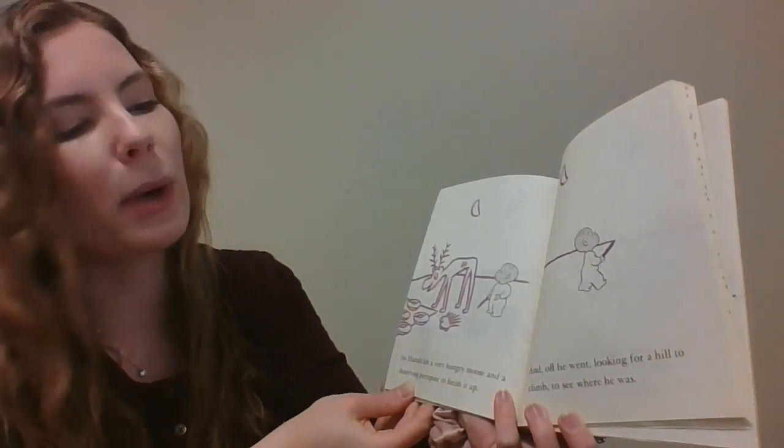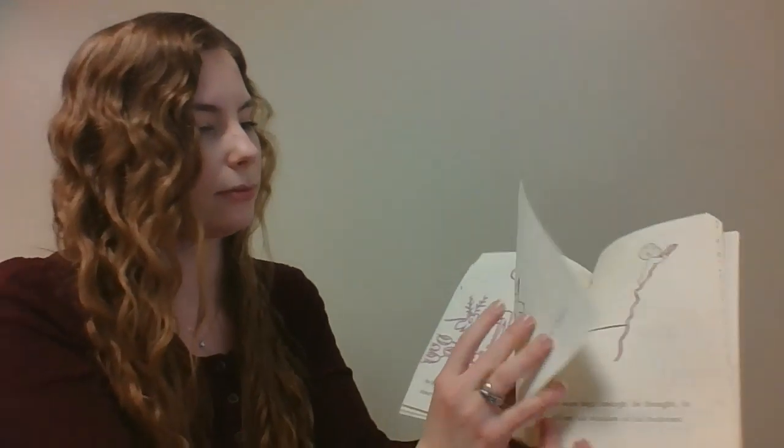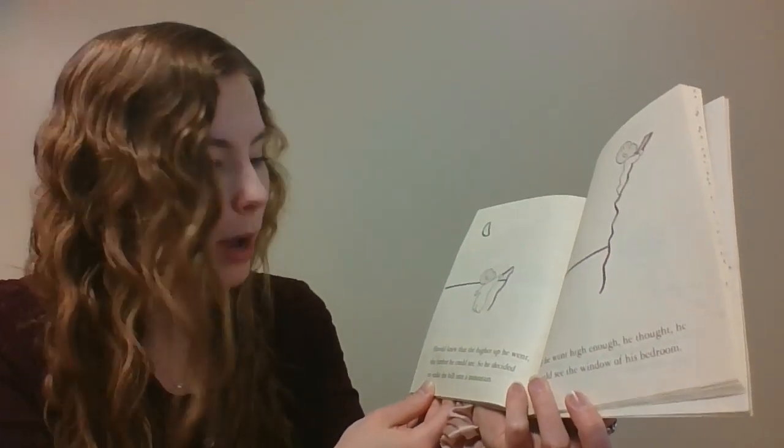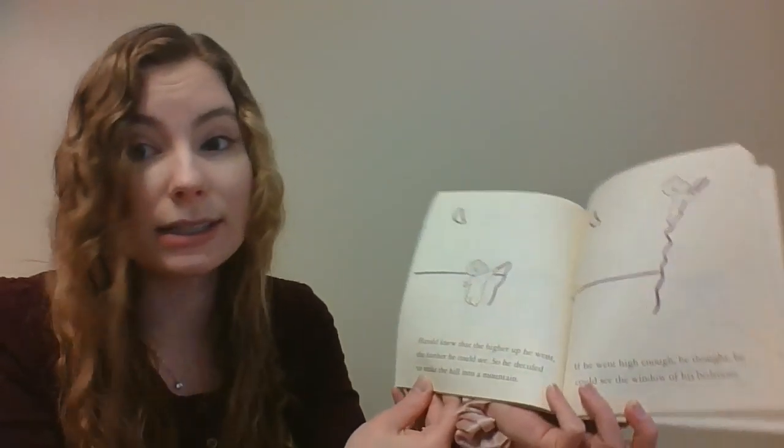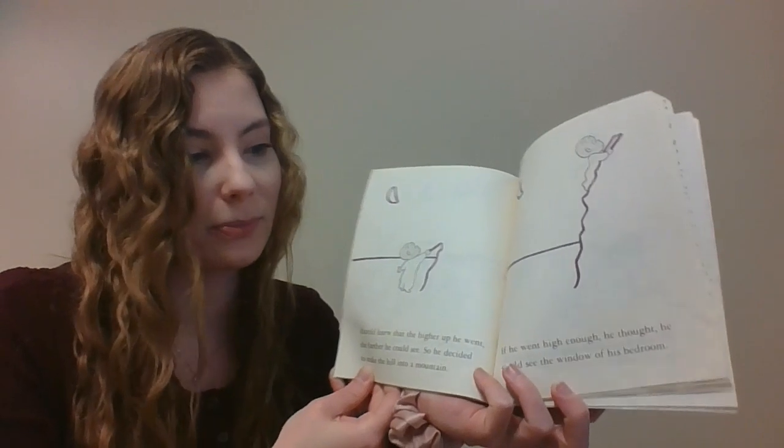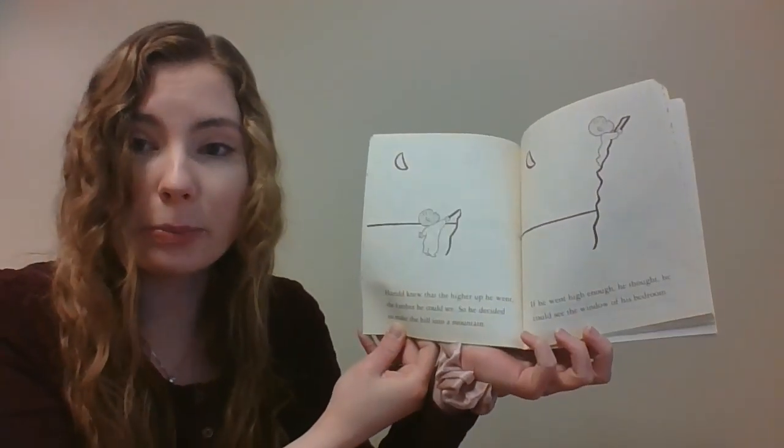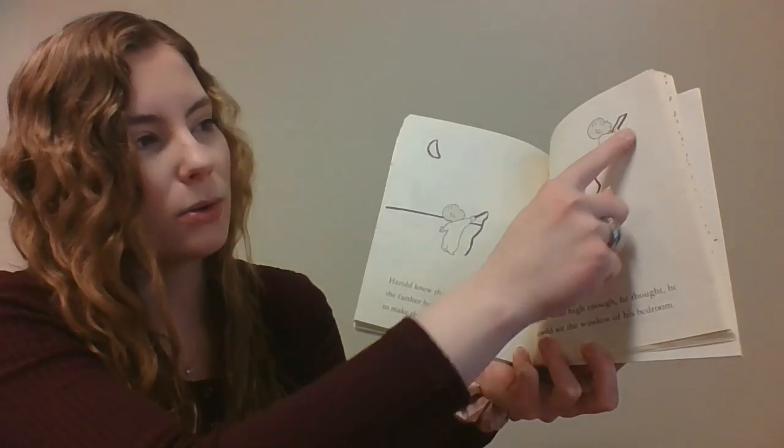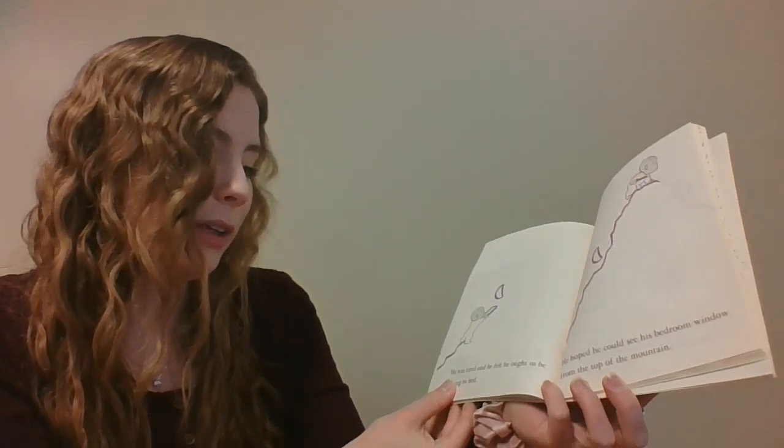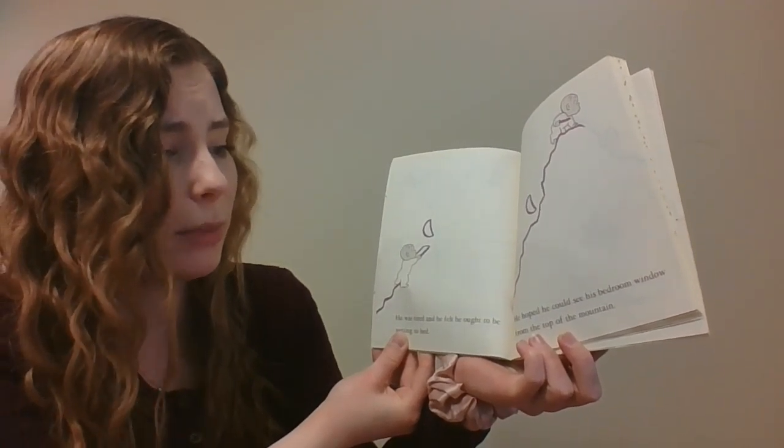And off he went, looking for a hill to climb to see where he was. Harold knew that the higher up he went, the farther he could see. So, he decided to make the hill into a mountain. If he went high enough, he thought, he could see the window of his bedroom. Up the mountain he goes. He was tired and he felt he ought to be getting to bed. He hoped he could see his bedroom window from the top of the mountain.